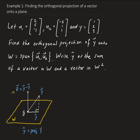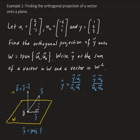So define y-hat. We're going to take y dotted with u1, divided by u1 dotted with itself, plus y dotted with u2, divided by u2 dotted with itself. And then we multiply each of these by u1 and u2 respectively. So we have the (y·u1 / u1·u1) times u1, plus (y·u2 / u2·u2) times u2.